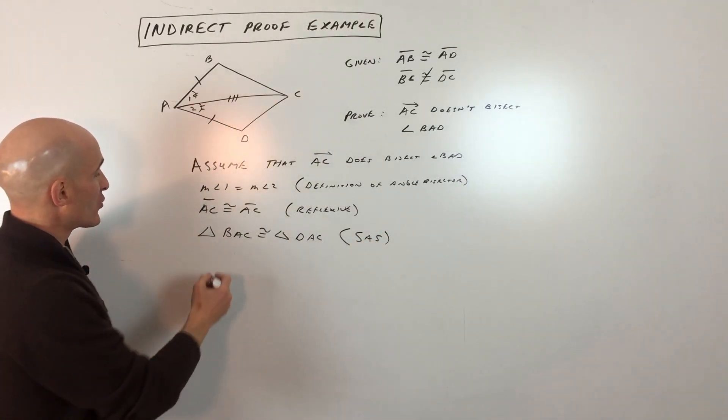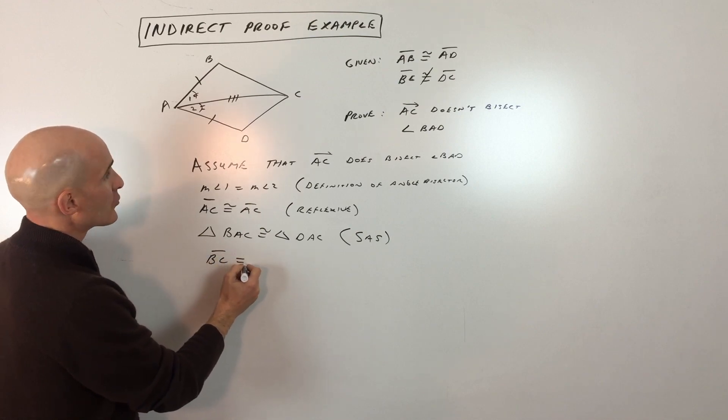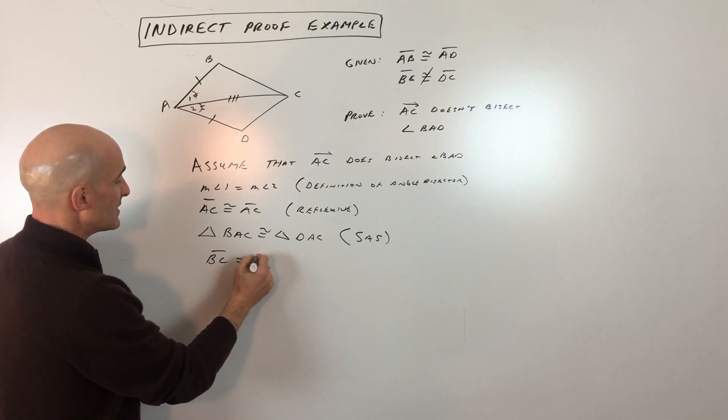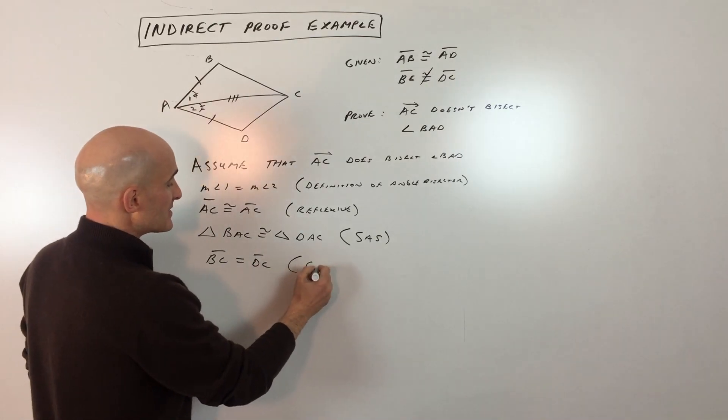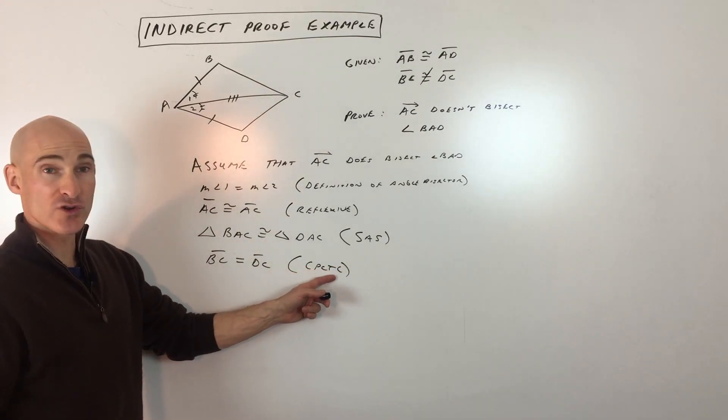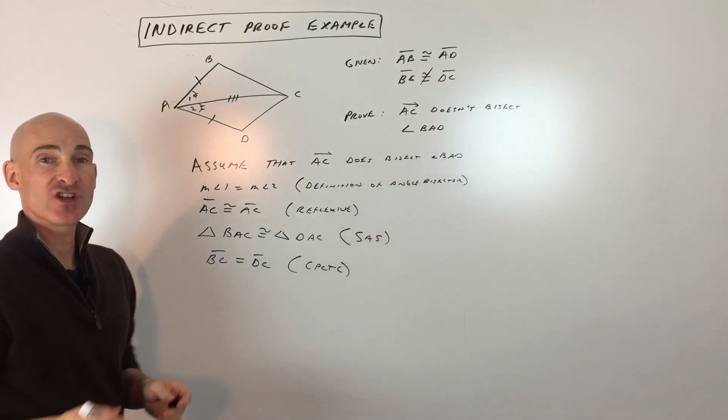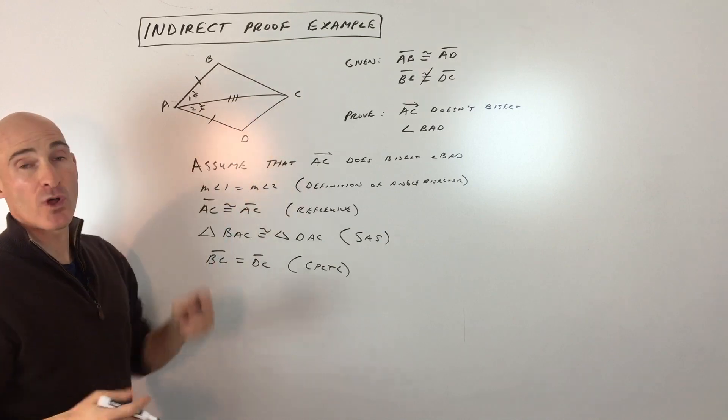Now that we know these two triangles are congruent, we can say that BC is congruent to DC. That's by CPCTC, which means corresponding parts of congruent triangles are congruent. Once we prove the triangles are congruent, the parts that match up—BC and DC—will also be congruent.